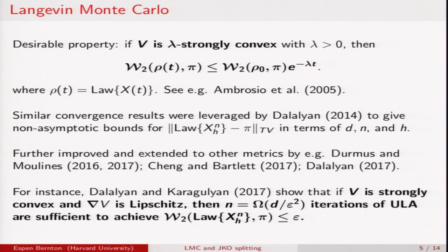Results of this kind were leveraged by Dalalyan to give non-asymptotic bounds for the TV distance between the law of the iterates and pi. This has been improved and extended in a bunch of papers over the last couple of years and this is only a subset of them. To give you some flavor of the kind of results that are available, Dalalyan and Karagylian show that if V is strongly convex and gradient Lipschitz, then roughly speaking on the order of d over epsilon squared iterations of ULA is sufficient to achieve a Wasserstein error of epsilon.